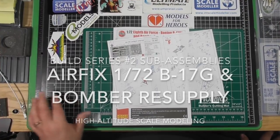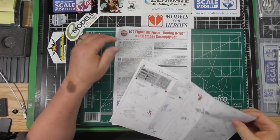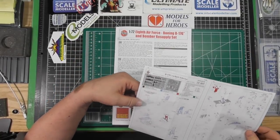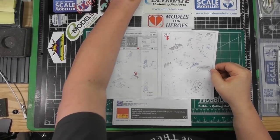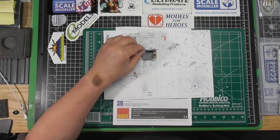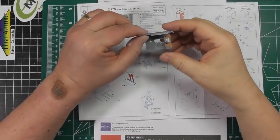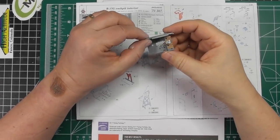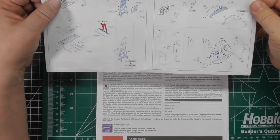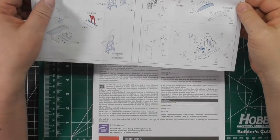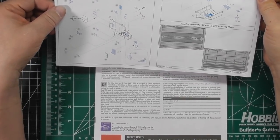Hello everyone, Brett back from High Altitude Scale Modeling, finally getting around to part two of my B-17G build. In part one we left off doing photo etch on the seat, and I started doing photo etch on the cockpit floor and walls. All this photo etch is just for the interior.